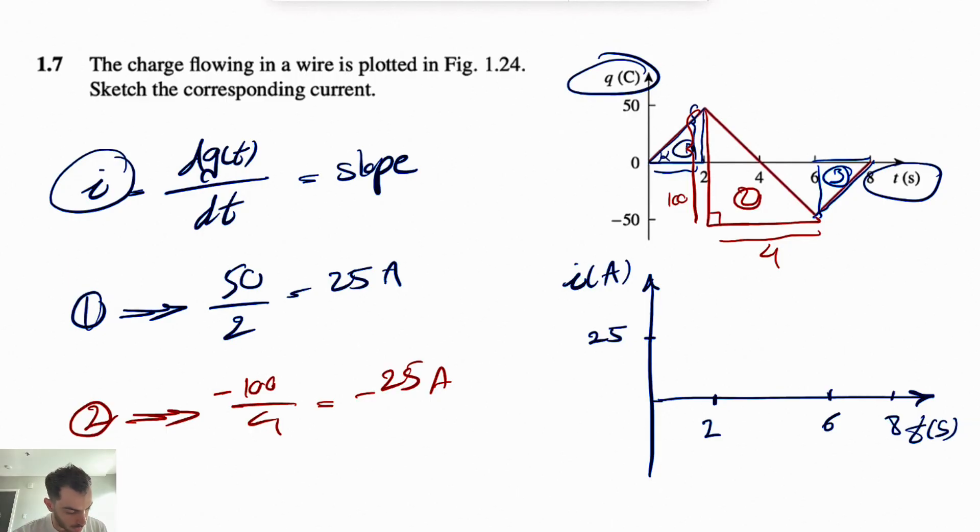I forgot to show what we had in the previous part. So this is going to be our graph. So in the second region, we're going to go negative 25, so -25. And between 2 to 6, we're going to have this.